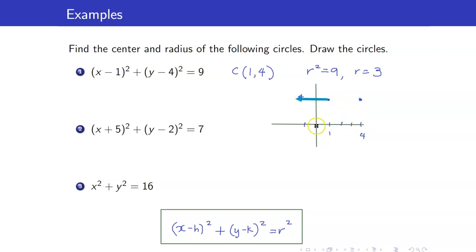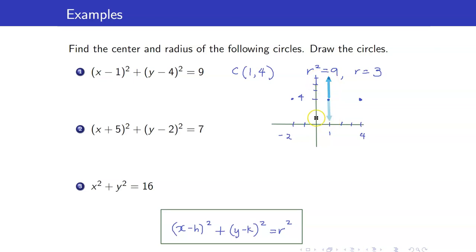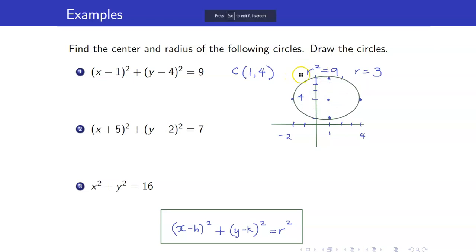Going 3 units to the left: that's 0, negative 1, negative 2, putting us at (−2, 4). Then another 3 units up, and 3 units down. This is now our circle.